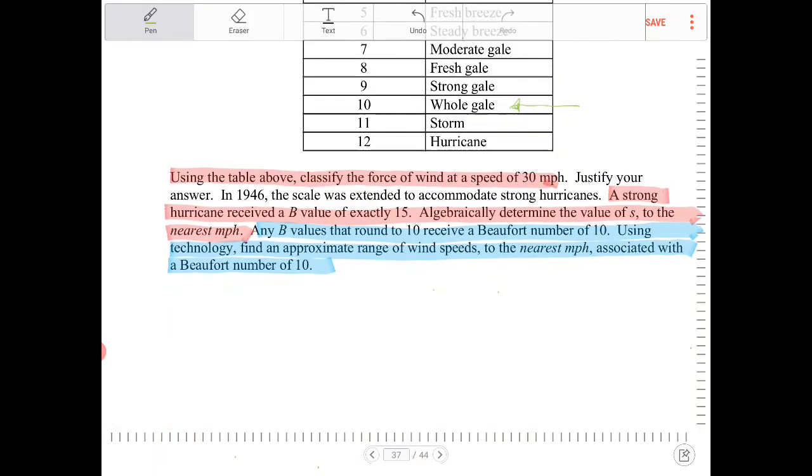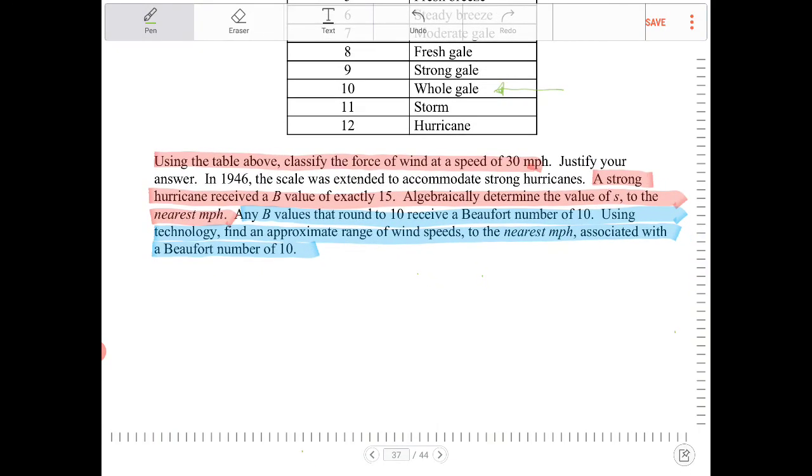There are actually three different problems in this problem here. So what I'm going to do is I'm going to go through one at a time. So the first question is, using the table above, classify the force of wind at a speed of 30 miles per hour.